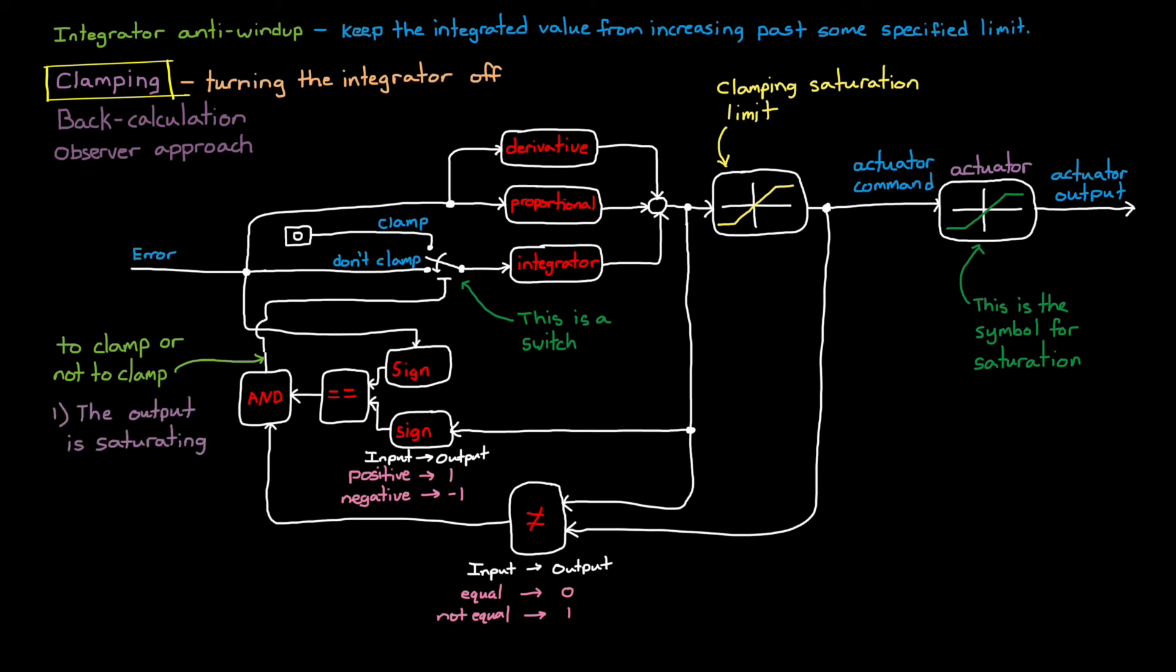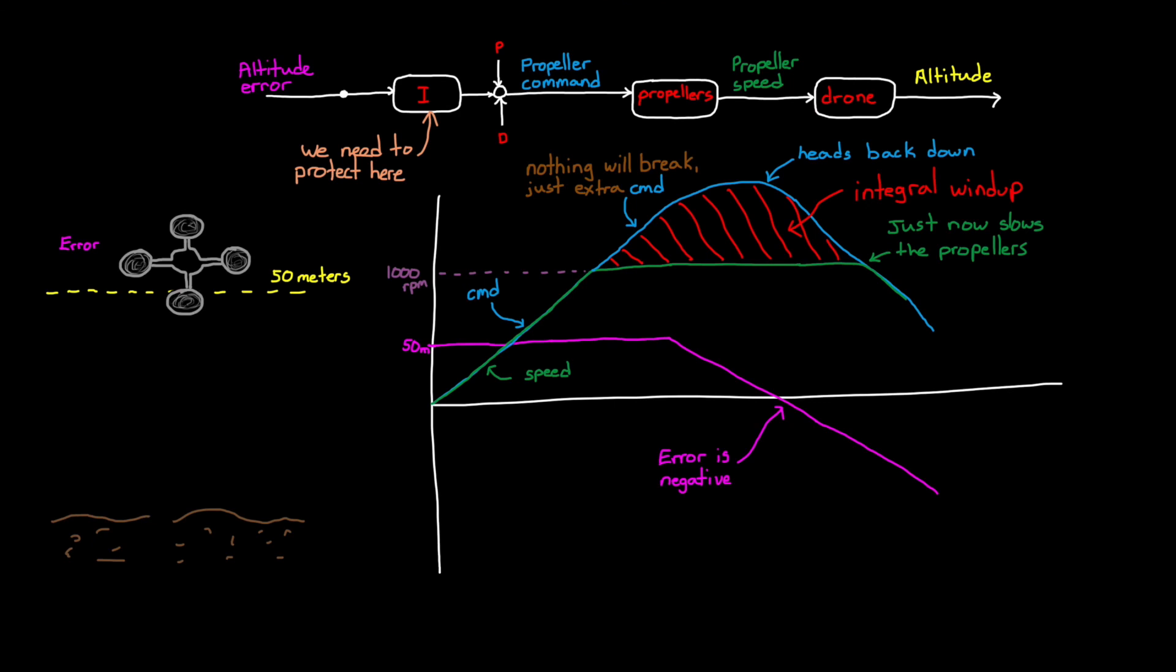One, the output is saturating, and two, the error is the same sign of the controller output. If we had an anti-windup method on the drone that we were holding in saturation, then as soon as the drone got to the commanded altitude, the error would switch signs and the integral path would immediately start to decrease the propeller speed, limiting the overshoot. And that's pretty awesome.